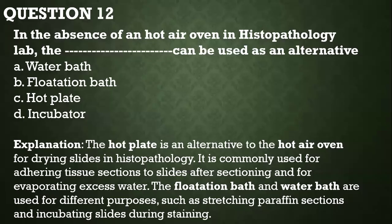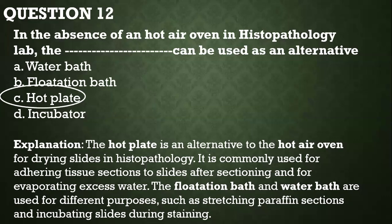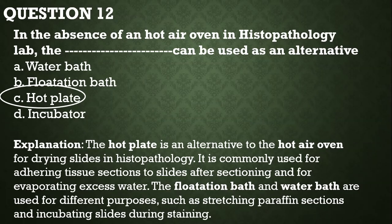Question number twelve: in the absence of a hot air oven in the histopathology lab, what can be used as an alternative? The answer is the hot plate, because the hot plate is an alternative to the hot air oven for drying slides in histopathology. It's commonly used for adhering tissues to slides after sectioning and for evaporating excess water. The flotation bath and water bath are used for different purposes, such as stretching paraffin sections and incubating slides.